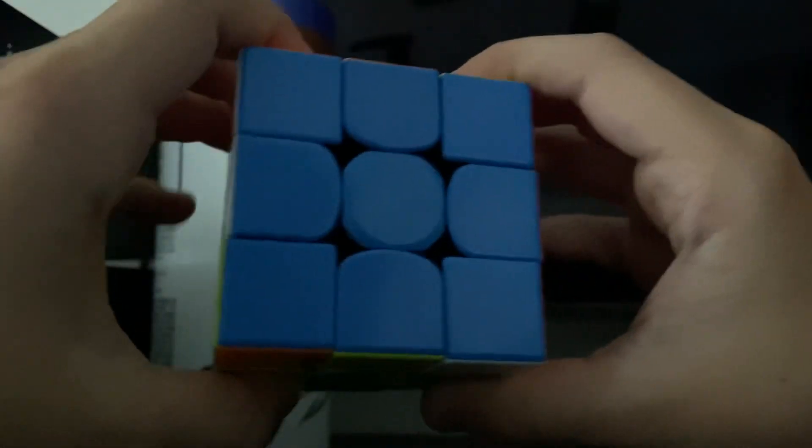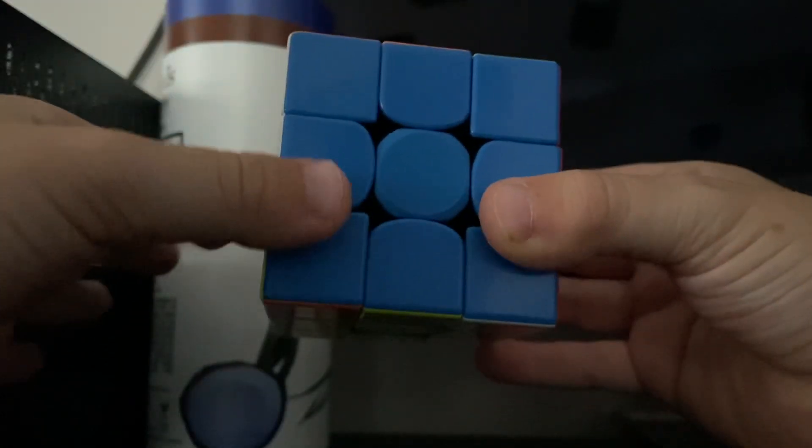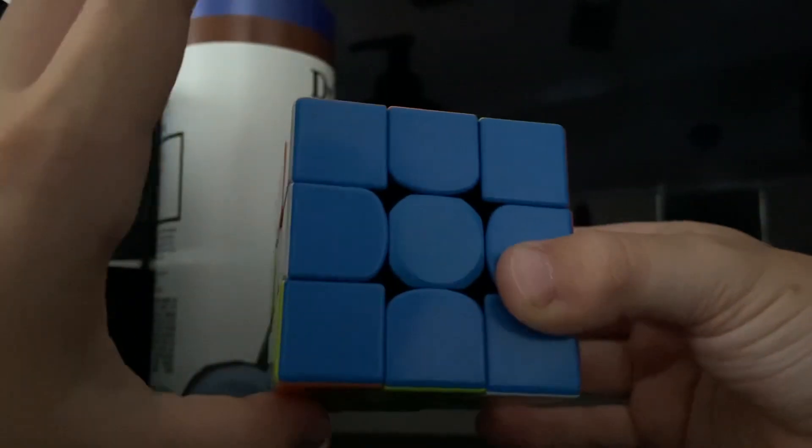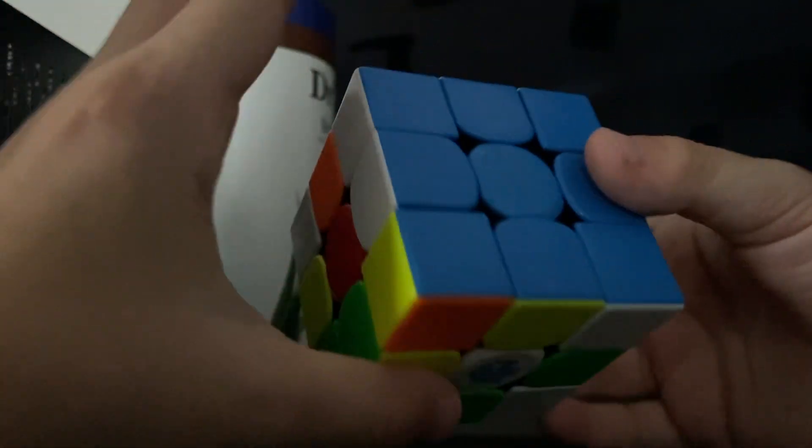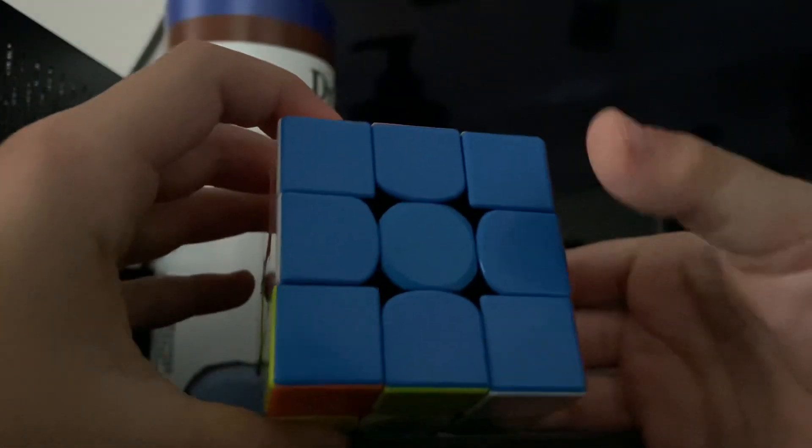Now move your cube over like this, actually, then first, instead of like this, you're going to move your thumb down one onto the second edge piece. Edge pieces have two colors, corners have three, and then you're going to move your other thumb to the other edge piece.